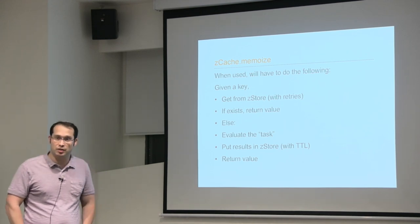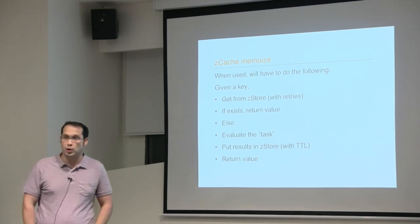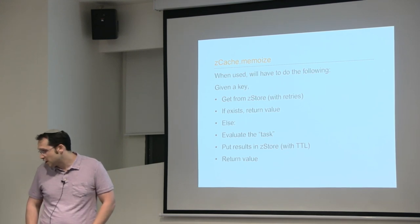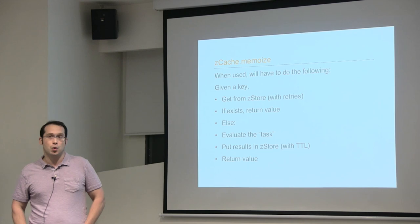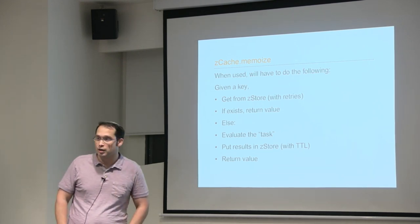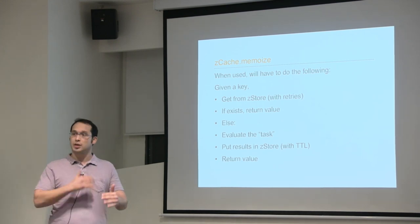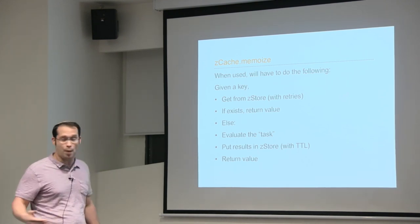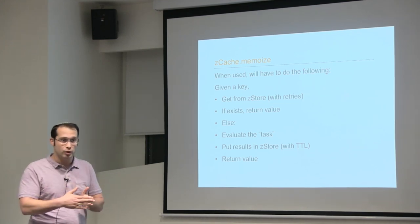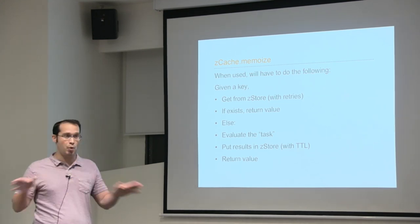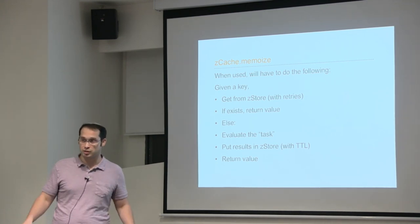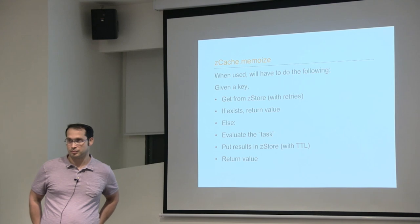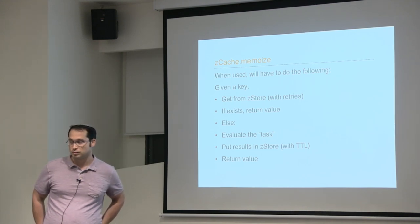A question about atomicity: what happens if two requests for the same key come in concurrently? In our implementation, if a future for a key is currently in-flight and another request comes in with the same key, we map both to the same future. Once it completes, both users get the response. Getting the future is atomic — you will get the same future if you request the same key.